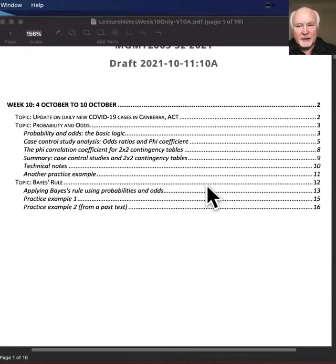Two things I would like to get through today. I'm not sure if we'll get all the way through them. The first one is looking at what are called two by two contingency tables and approaching it with methods where we use probability and odds.